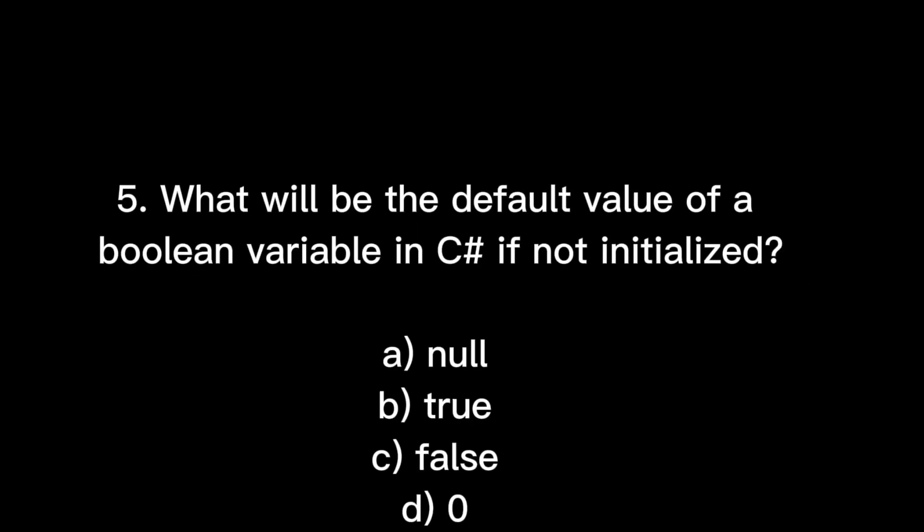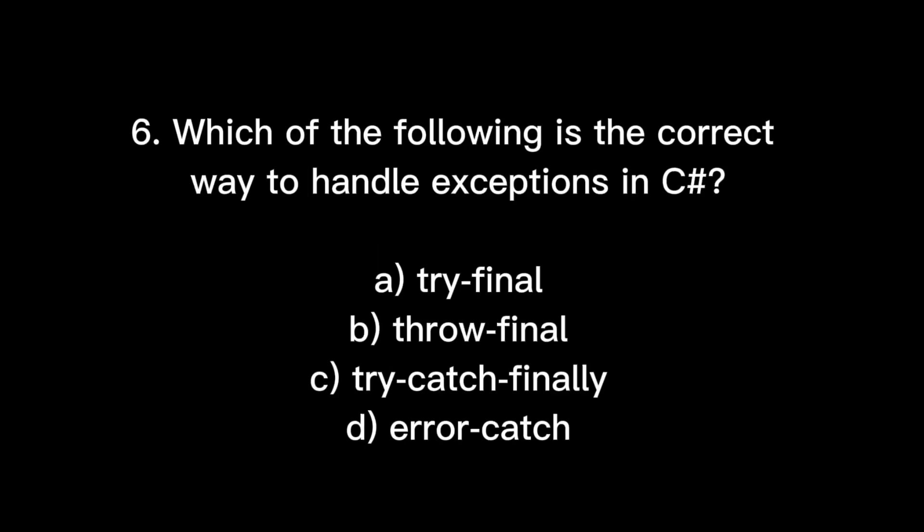Question: What is the default value of a boolean variable in C# if not initialized? Options: null, true, false, zero. The correct answer is C — false, because the default value of a bool variable is false. Question: What is the correct way to handle exceptions in C#? The correct answer is try-catch-finally. 'Try-final' and 'true-final' are wrong options. The 'throw' keyword is only used to raise exceptions.